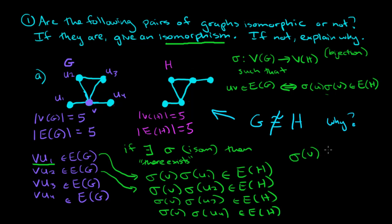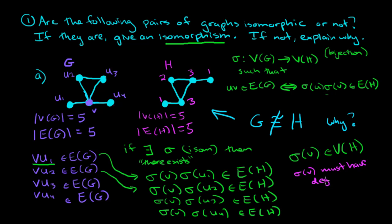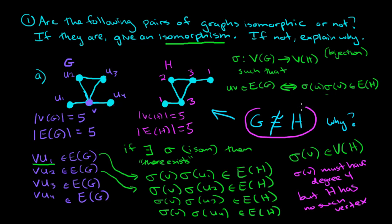Sigma(v) is some vertex in graph H. So let's look at the vertices of H and see if we can find any vertex with degree at least 4. Because sigma(v) is a vertex incident with all those different edges, which would have to be in H. However, looking at graph H, you can easily see that the degrees are 1, 3, 2, 3, and 1. So sigma(v) must have degree 4, but H has no such vertex — and that is exactly why these are not isomorphic graphs.